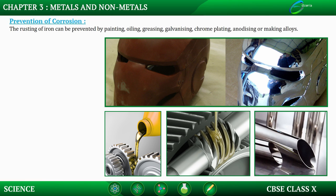Galvanization is a method of protecting steel and iron from rusting by coating them with a thin layer of zinc. The galvanized article is protected against rusting even if the zinc coating is broken. We dip the iron or steel into zinc so that a layer is formed and it prevents corrosion — that is called galvanization. Chrome plating gives the metal a shiny surface so it does not come in contact with the environment and is saved from rusting.